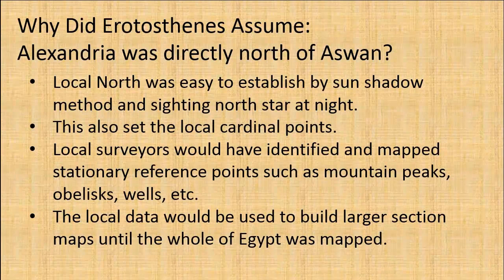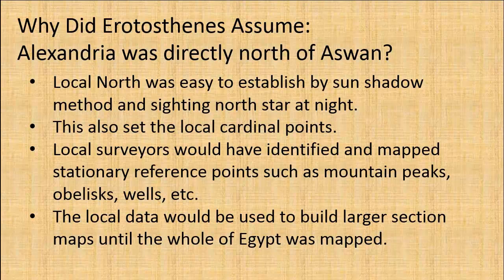Why did Eratosthenes assume Alexandria was north of Aswan and the local noon would occur at the same time in both locations? Well, many possibilities, a most likely explanation. Local north was easy to establish by the sun's shadow method. When an obelisk shadow reached a minimum during the day, it was local noon, and the shadow aligned with true north. Sighting the north star at night gave the same local true north direction.